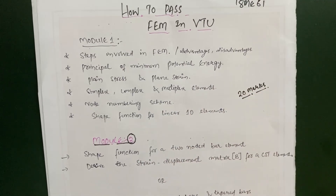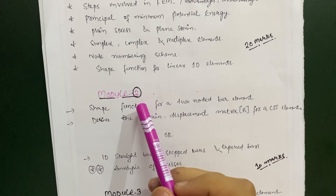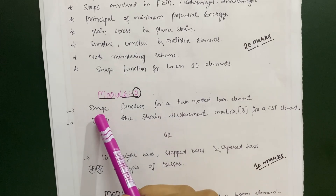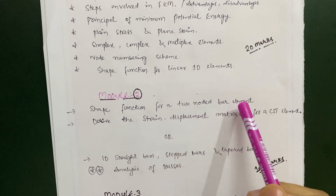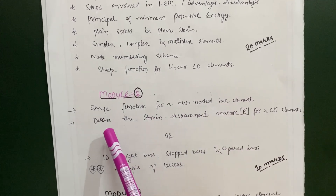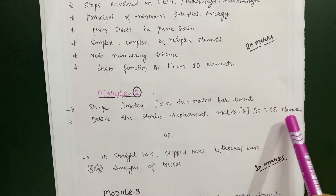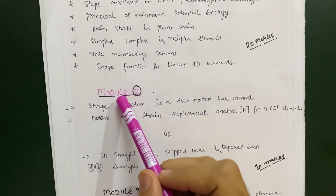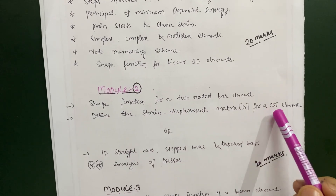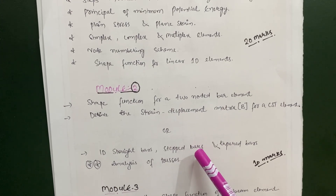In Module 1, there is no need to go through bar problems — just focus on the theory part. In Module 2, there are problems as well as theory and derivations. Key topics include: deriving the shape function for a two-noded bar element, and deriving the strain displacement matrix B for a CST element — one of the most important questions in this module. You can also go through problems, which are simpler but lengthy.